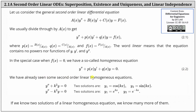We've already seen some second-order linear homogeneous equations. For example, y'' + k²y = 0, where two solutions are y₁ = cos(kx) and y₂ = sin(kx), and of course we could verify this. We've also seen y'' − k²y = 0, where two solutions are y₁ = e^(kx) and y₂ = e^(−kx). And again, we could verify this. But if we know two solutions of a linear homogeneous equation, we know many more of them.